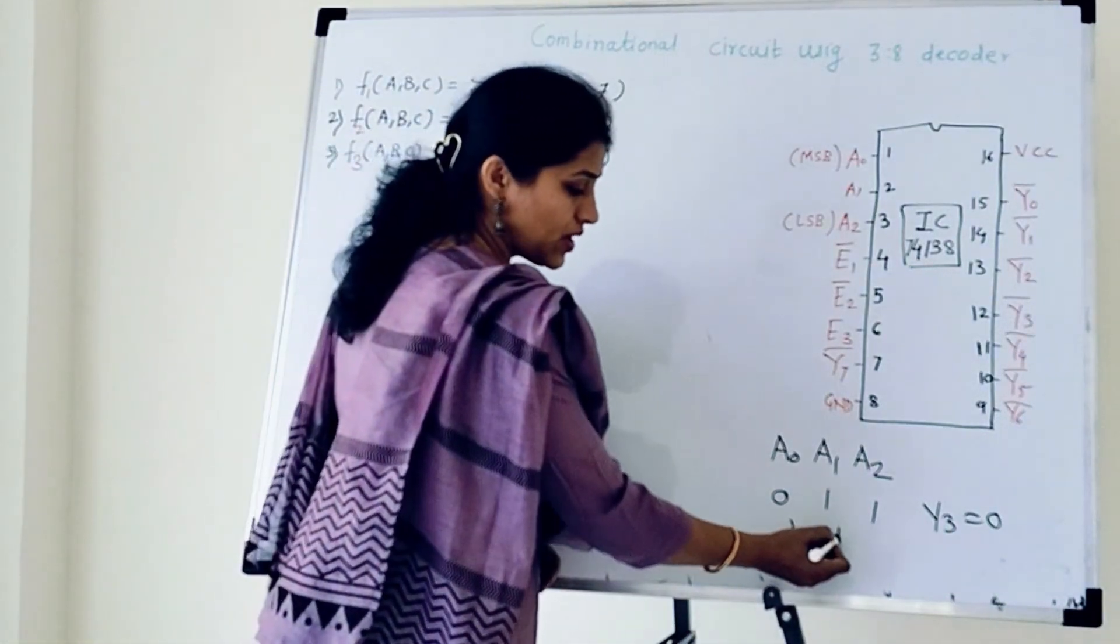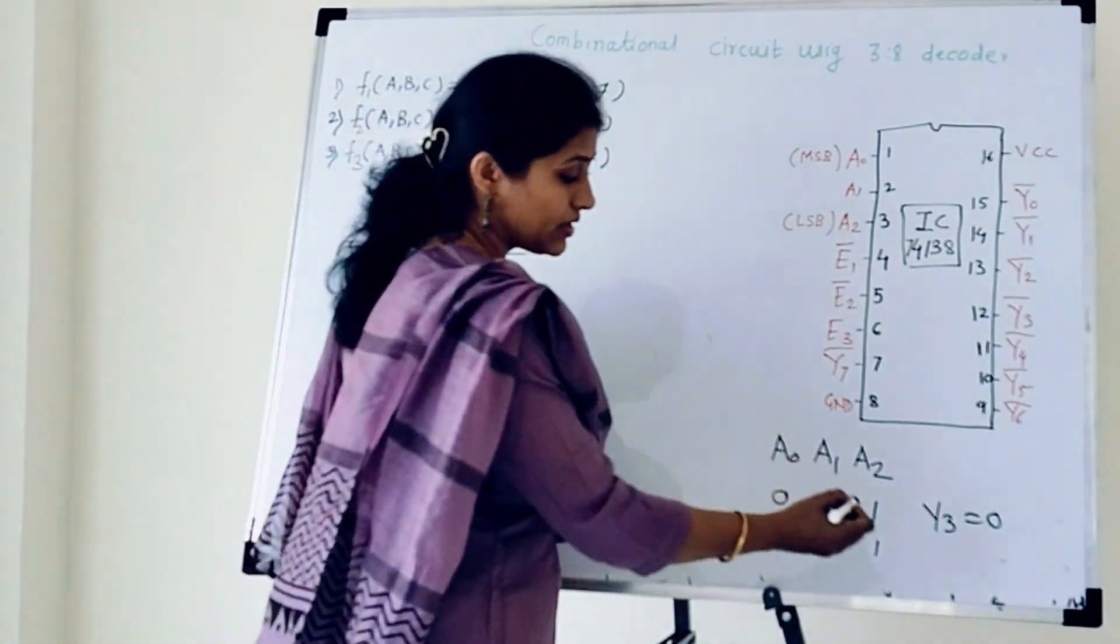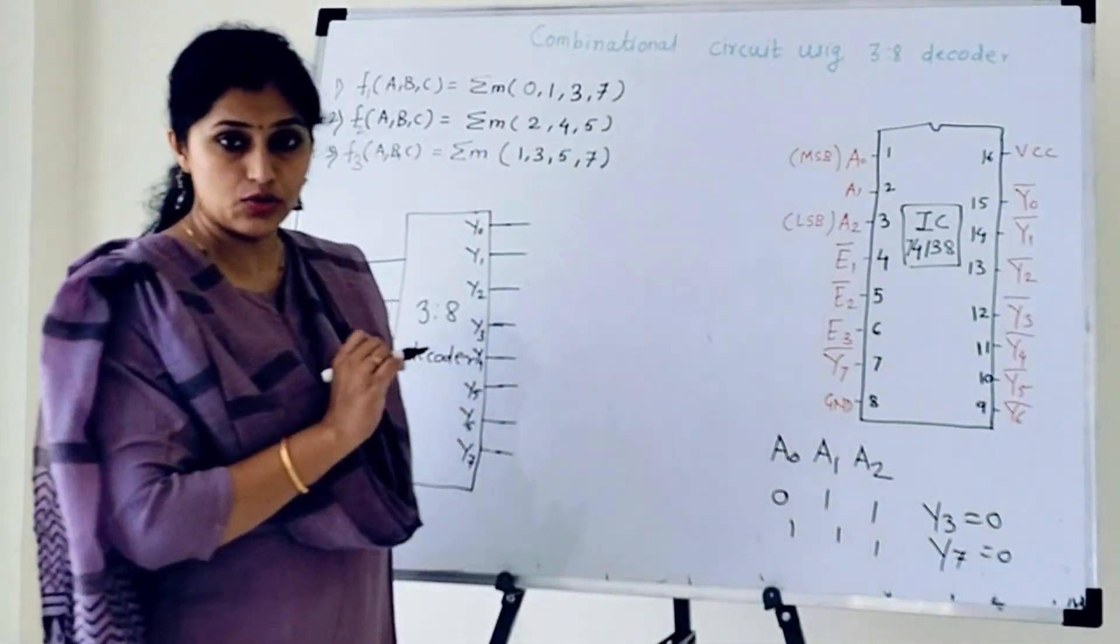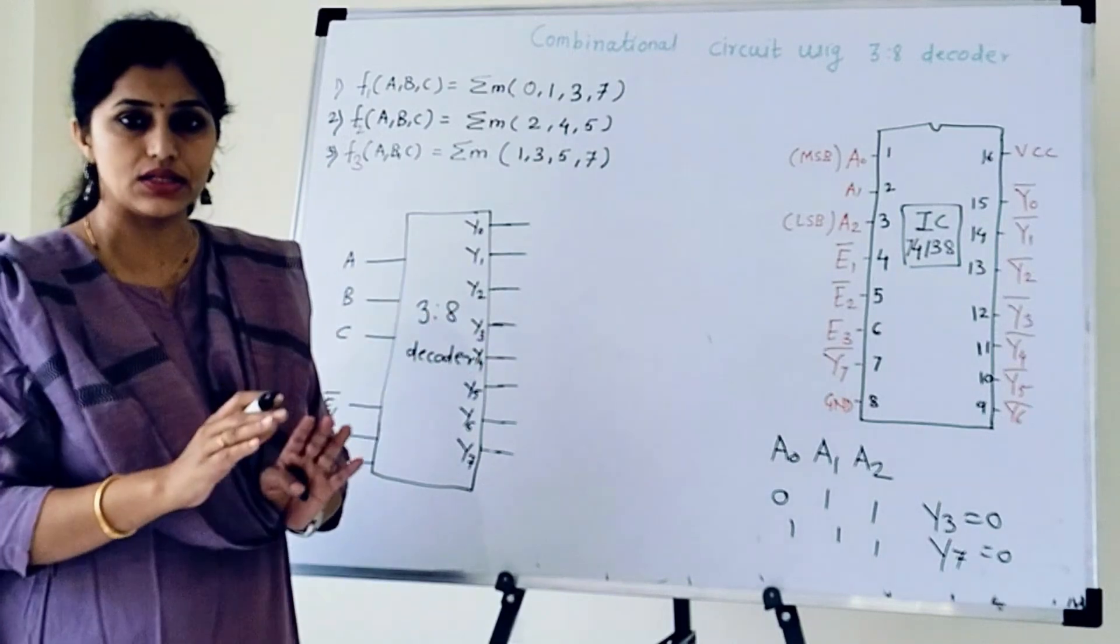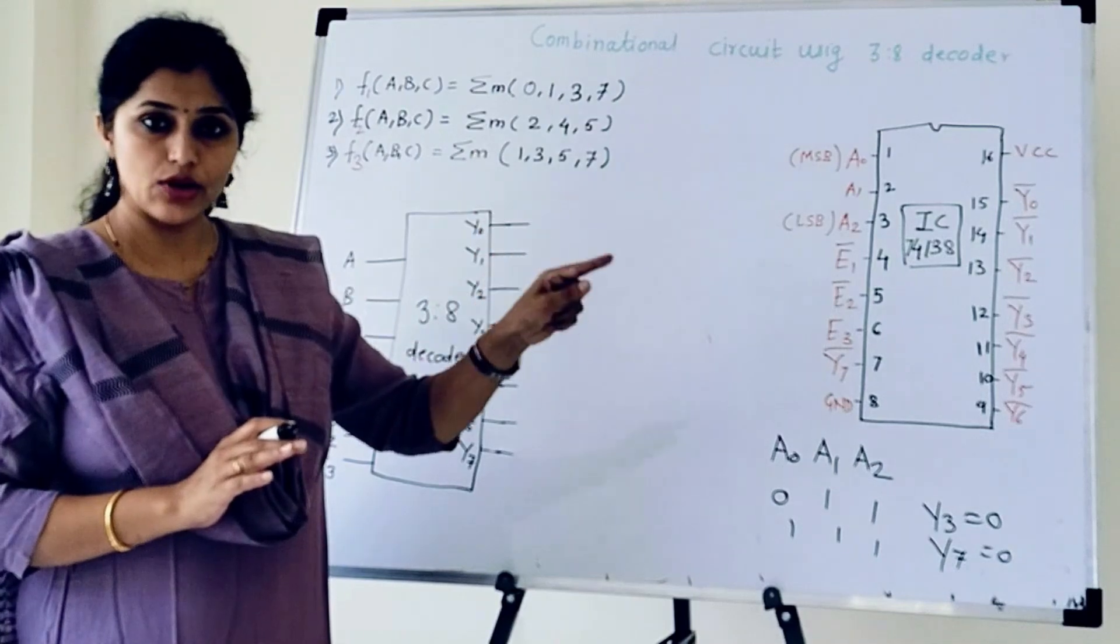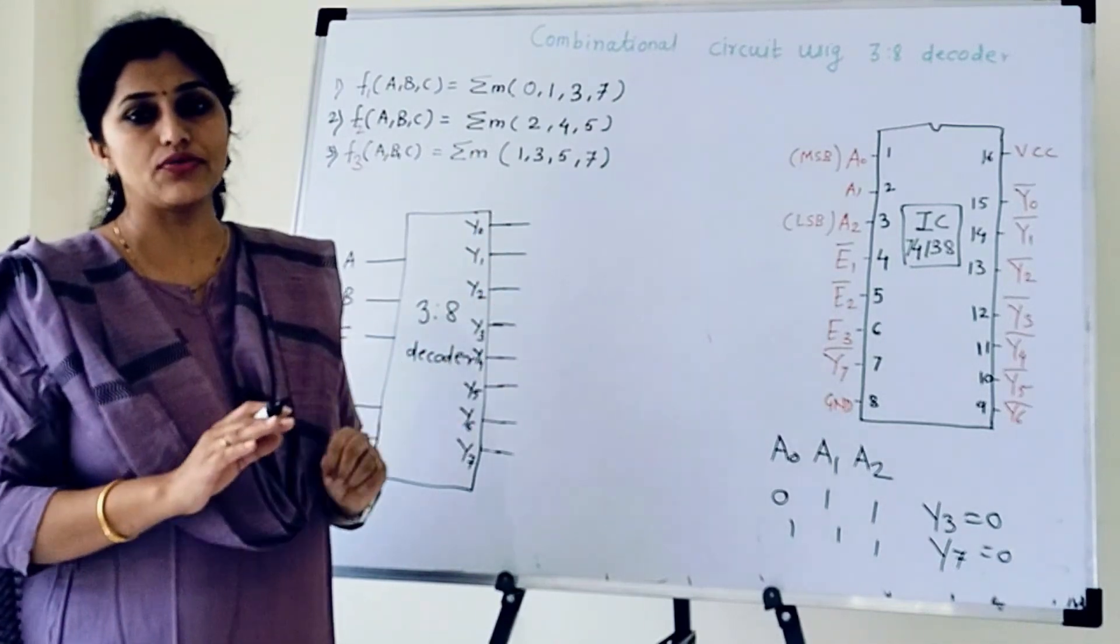In case of suppose 111 that is 7, so Y7 will become 0 and remaining outputs from Y0 to Y6 will remain 1. Here outputs are active low. The selected output is low and remaining outputs are 1.